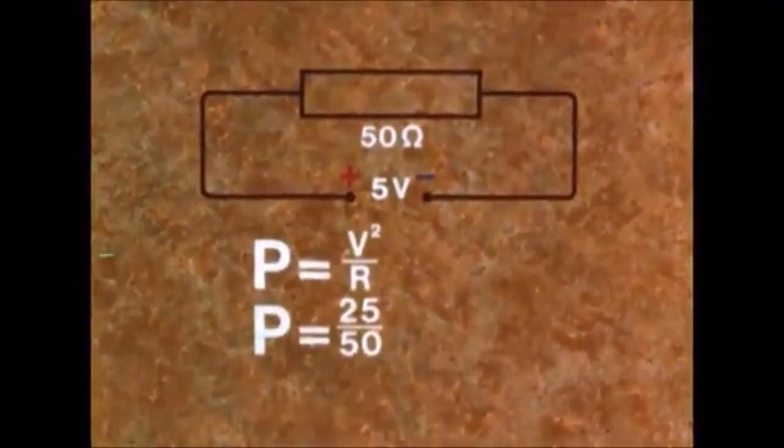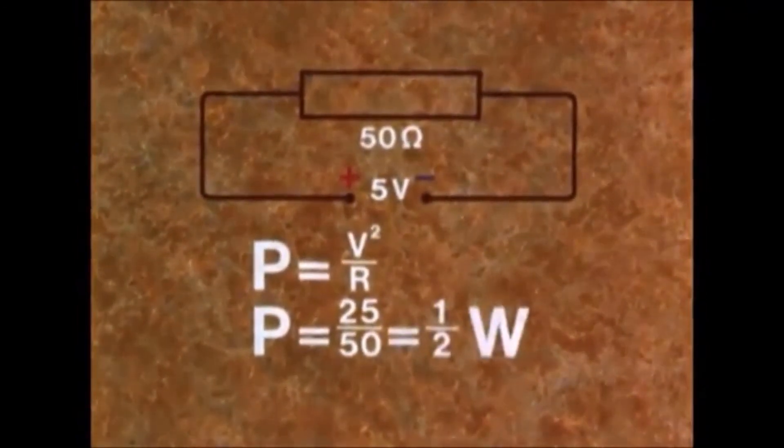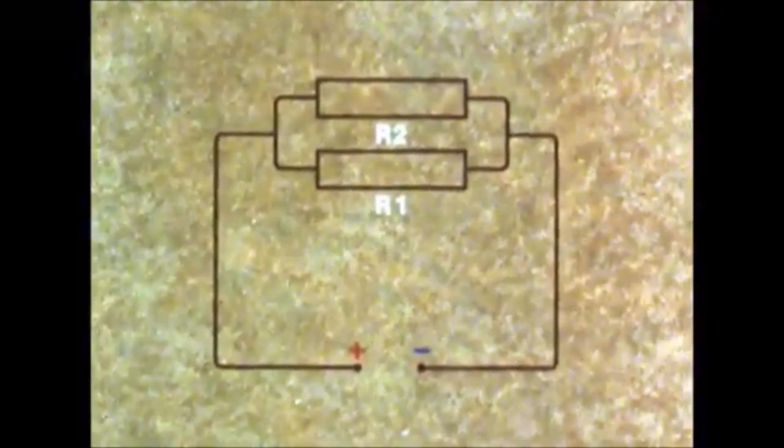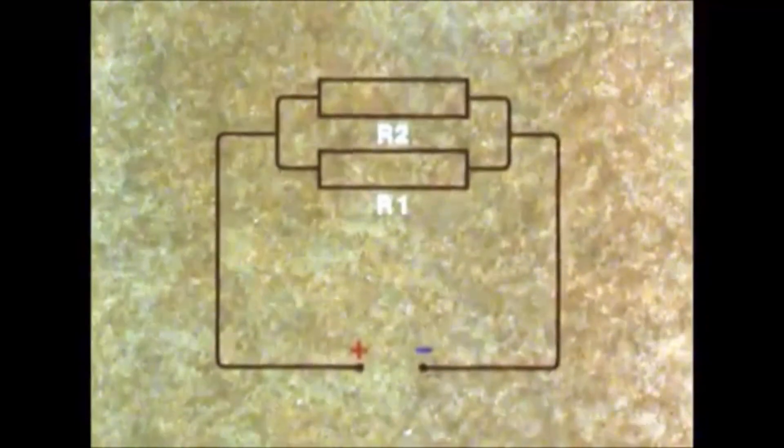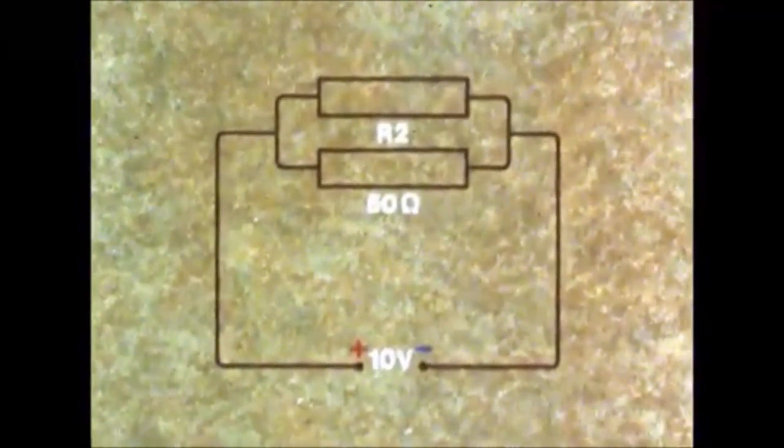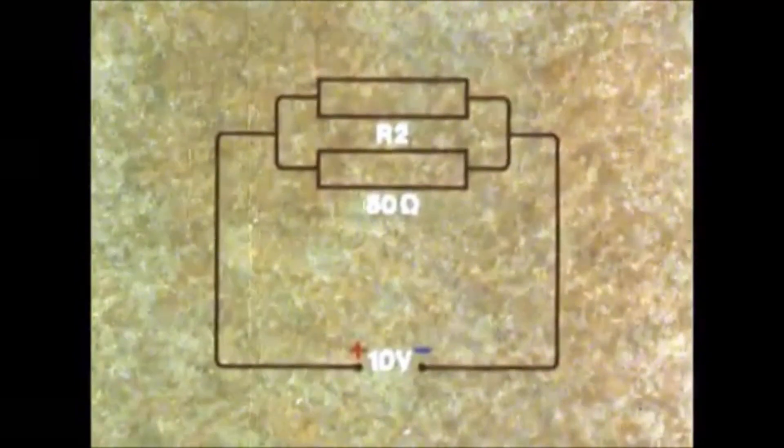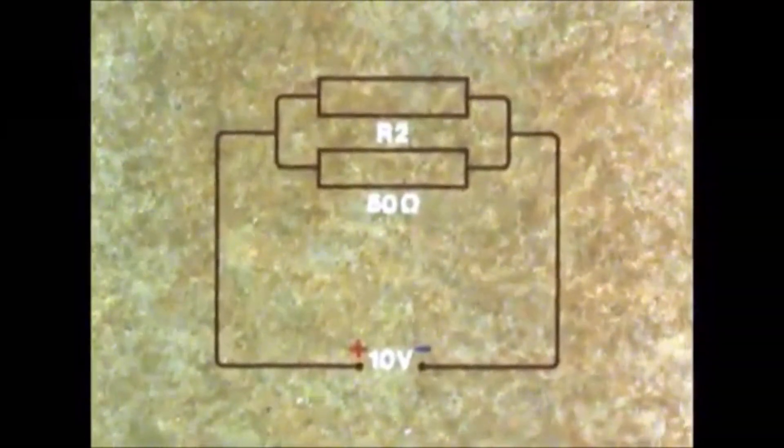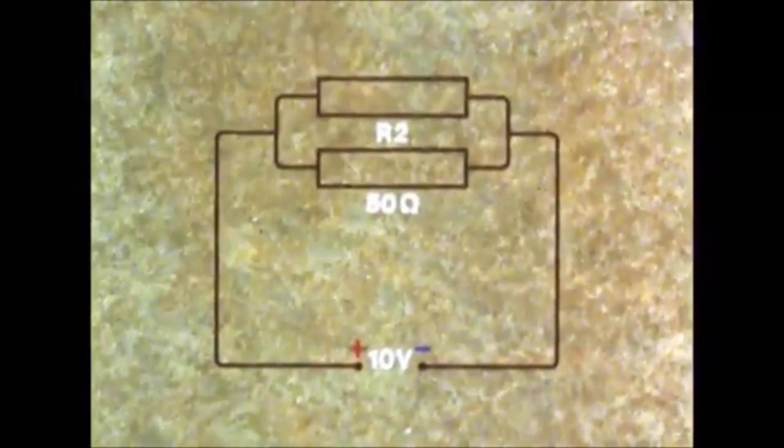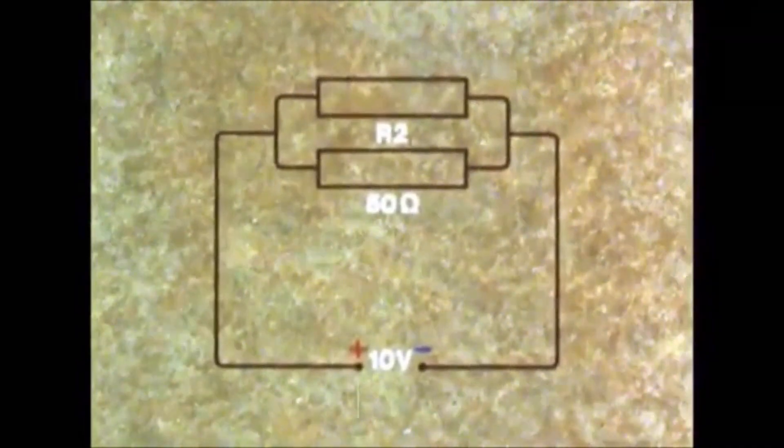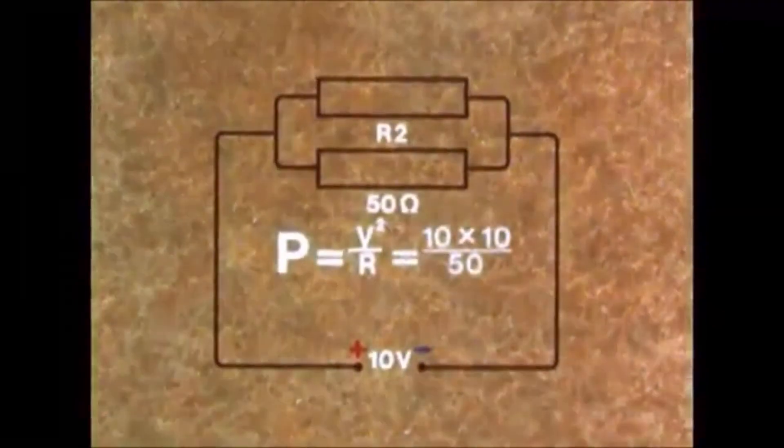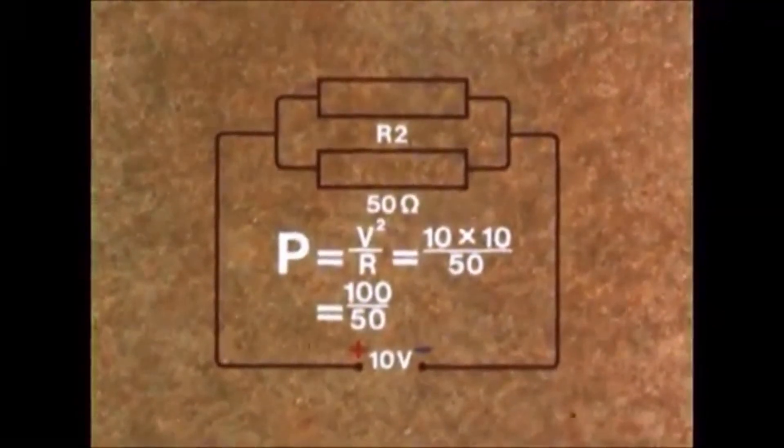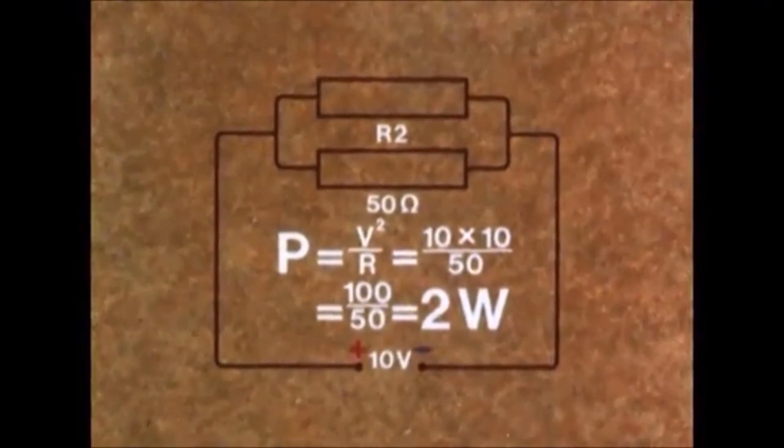Next, suppose we have a circuit with resistors in parallel. One of them has a resistance of 50 ohms and a 10 volt source is driving the current. Can we find the power being absorbed by the 50 ohm resistor? The answer is yes, easily, because P equals V squared over R, that is 10 squared over 50, 2 watts.